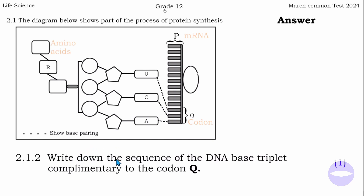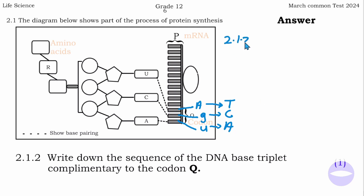The next question says: write down the sequence of DNA base triplet complementary to the codon Q. On the mRNA, the codon Q is A, G, U. Because this is mRNA and mRNA pairs with the DNA, this information is from the DNA. A pairs with T, G pairs with C, and U pairs with A. So for Question 2.1.2, the DNA sequence is T, C, A.